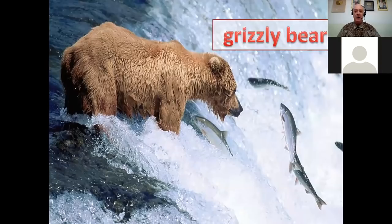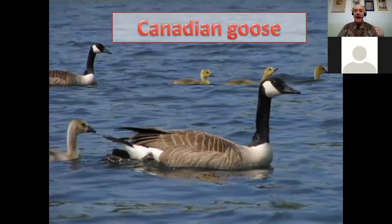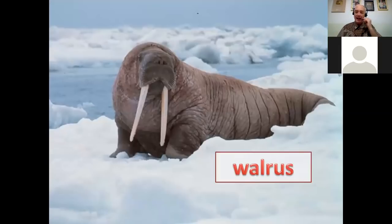That is a grizzly bear. The grizzly bear will be looking for the salmon — there he is, and there's the salmon right there. I think he is going to be eaten for lunch. The grizzly bear. The Canadian goose is a water mammal famous in Canada. The walrus — look at his long tusks. The walrus is a sea animal. He lives on the ice and he will be hunting in the winter.